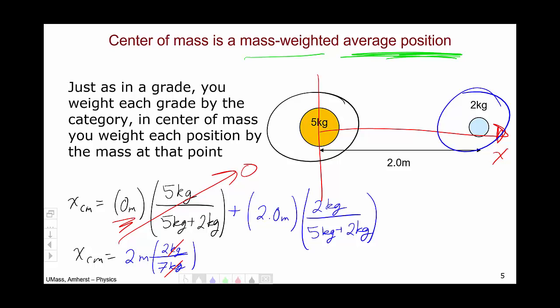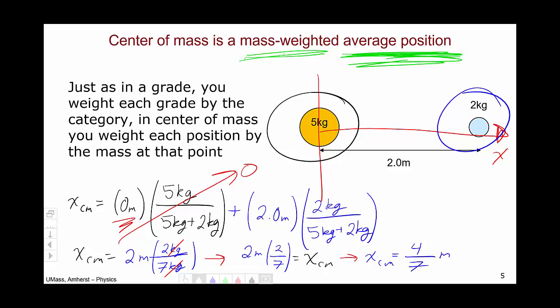Because of the 0, the first term goes to 0, leaving a center of mass of 2 meters times 2 kilograms over 7 kilograms. The unit kilograms cancels, leaving 2 meters times 2/7, giving a center of mass of 4/7 meters. If I plug this into a calculator, I get a numerical value of 0.57 meters, which means the center of mass is much closer to the 5-kilogram object than to the 2-kilogram object.